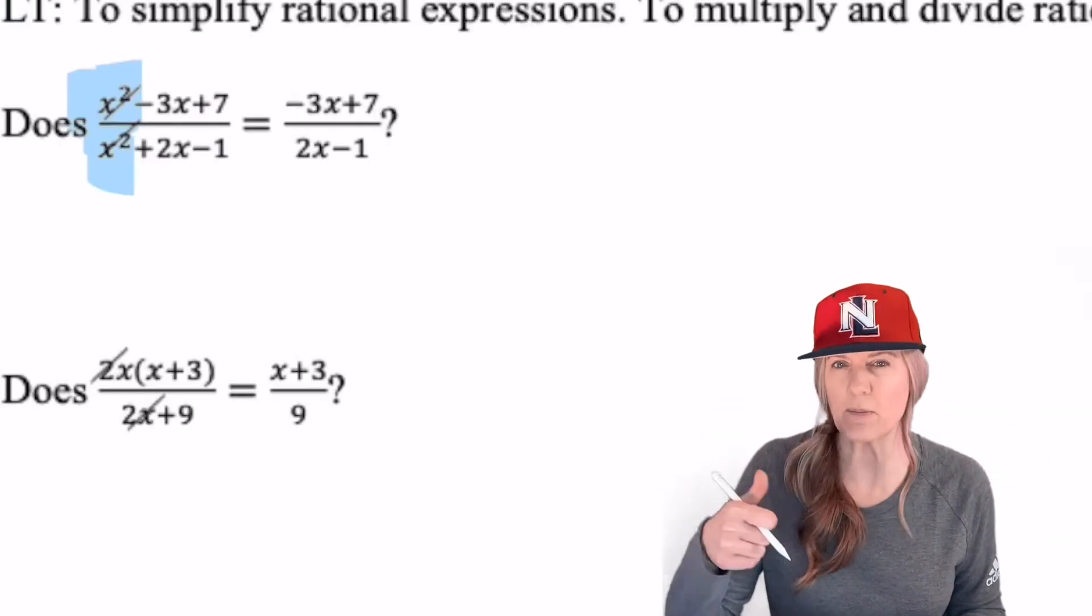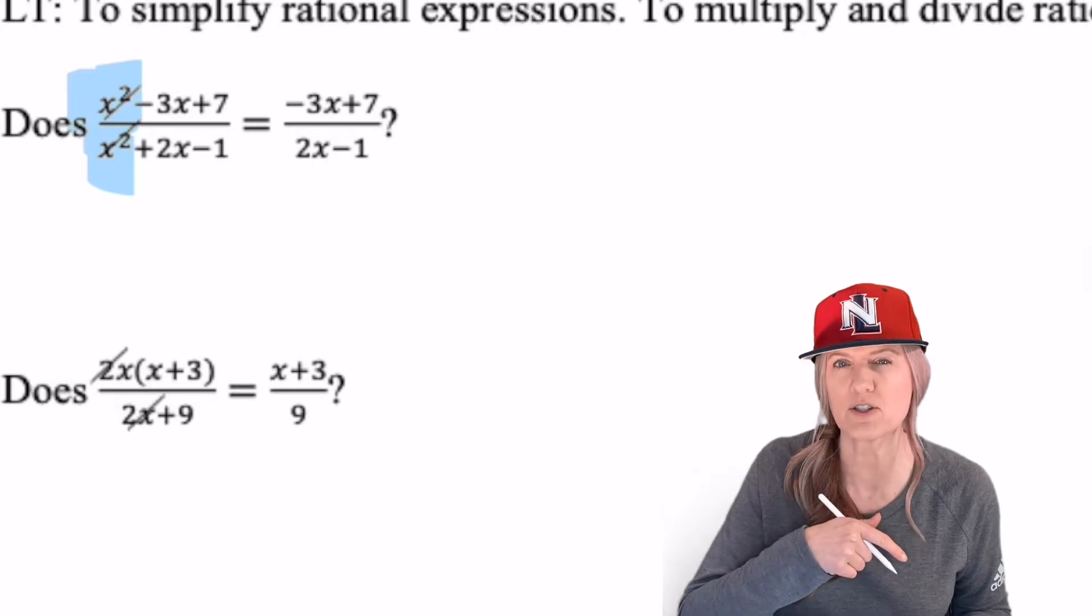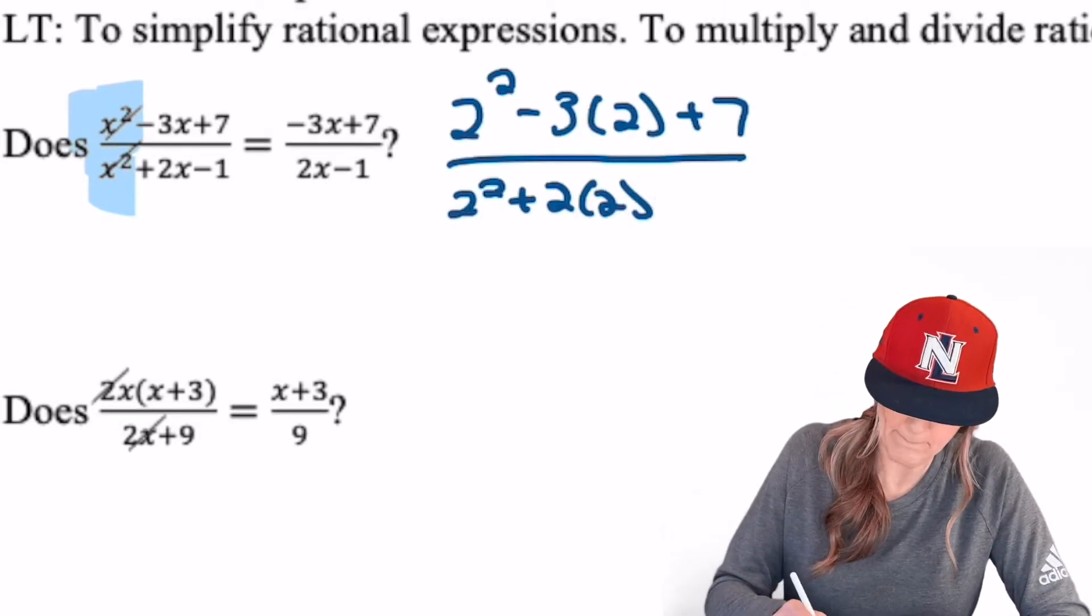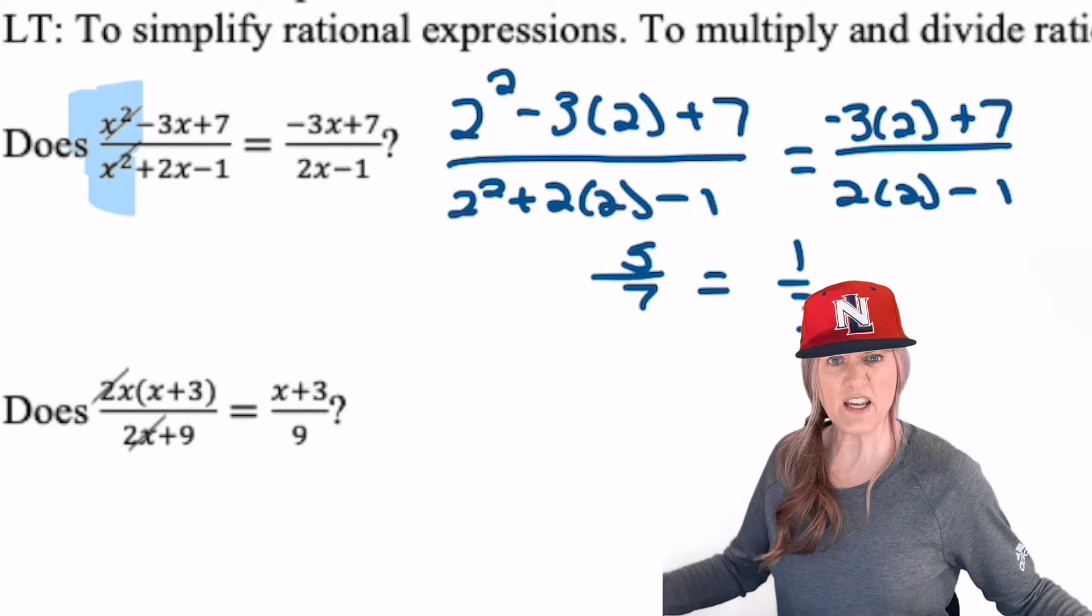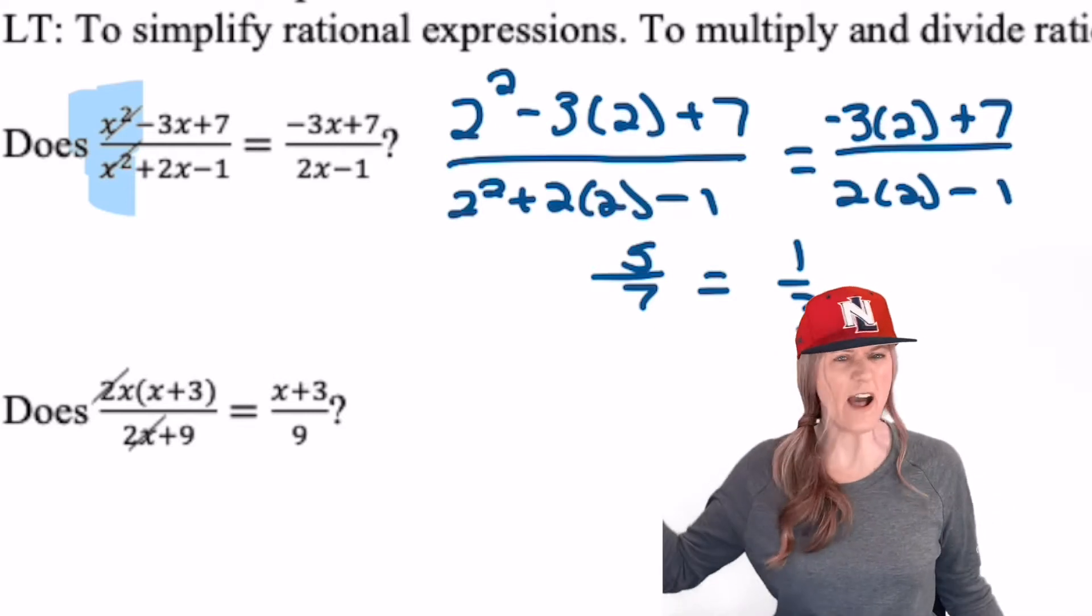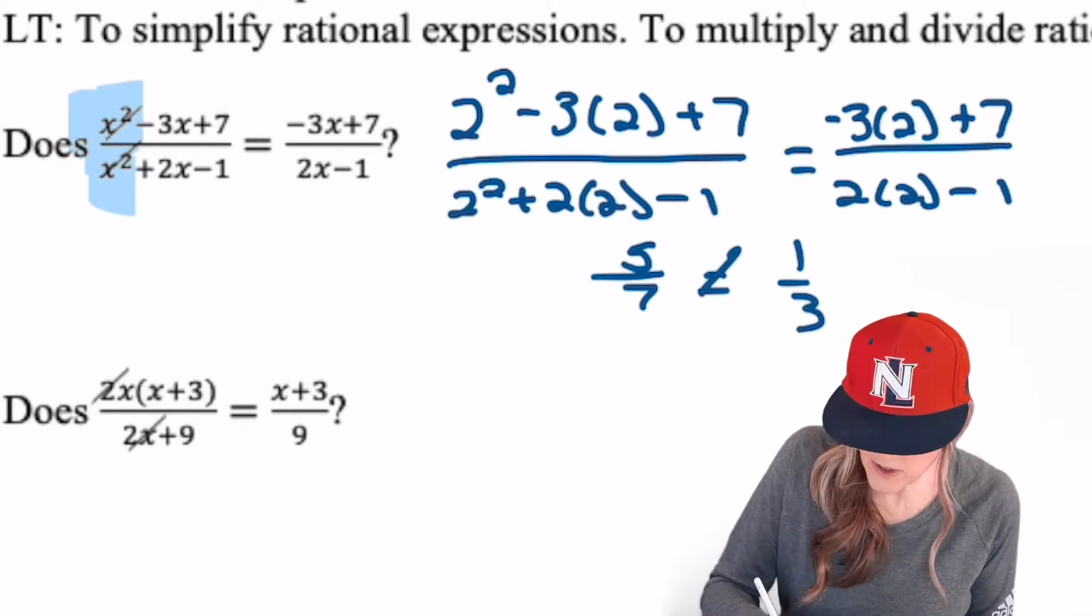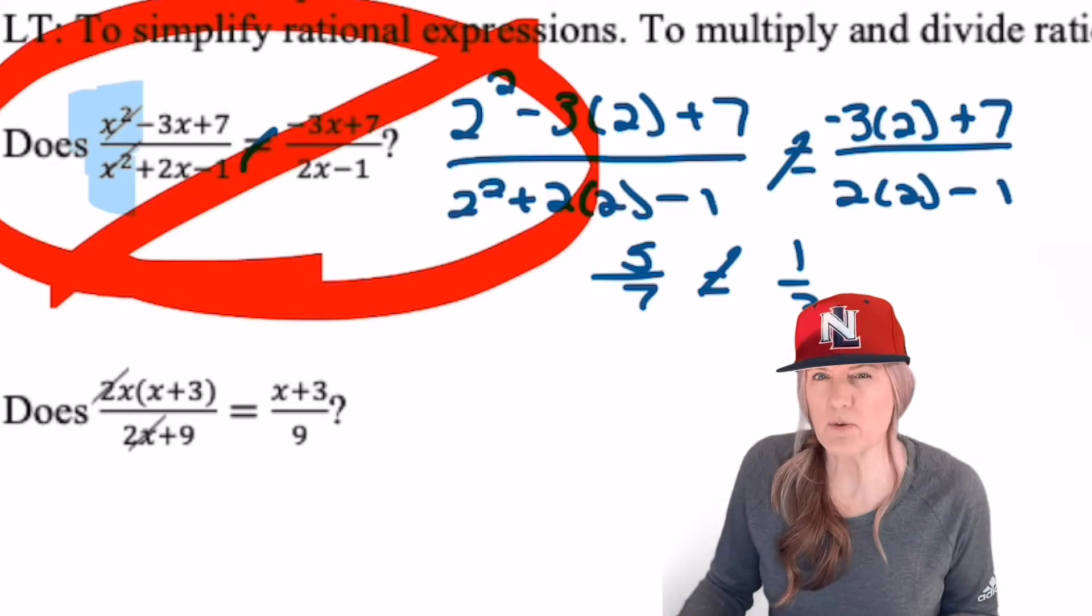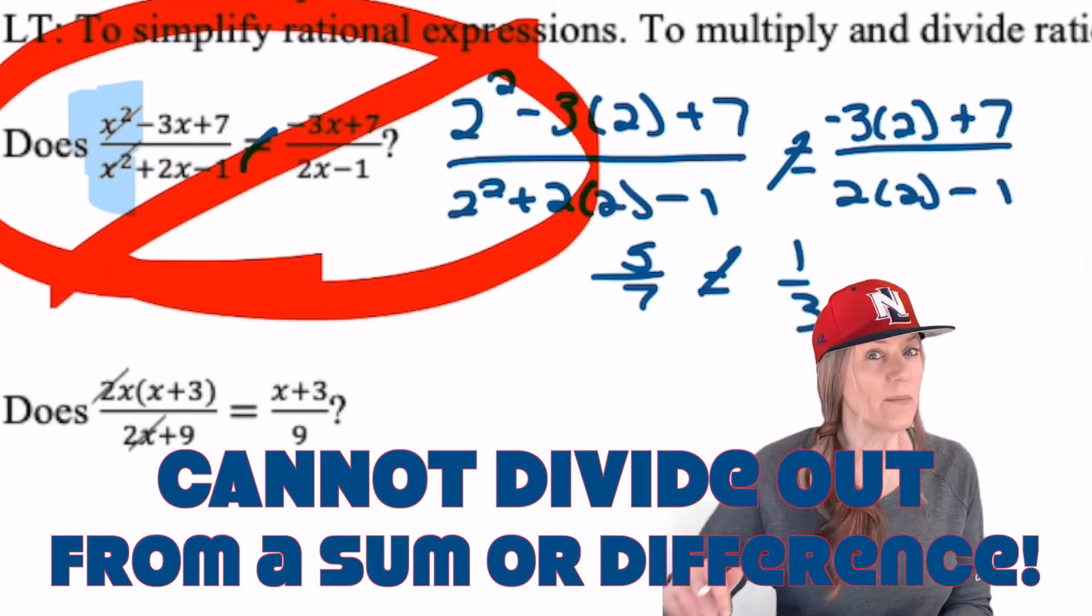Let's test it. We're gonna plug in a 2 for x and see if this is true. 5 sevenths equals 1 third? That's a foul ball! There's no way those are equivalent statements! Let's remember you cannot divide out from a sum or a difference.